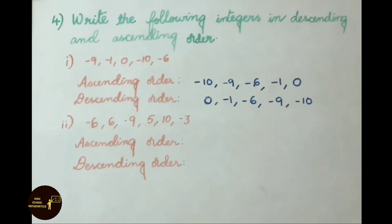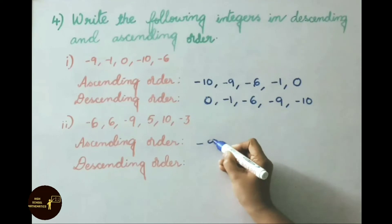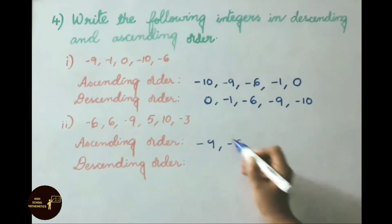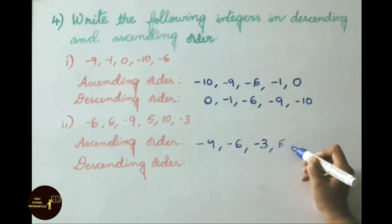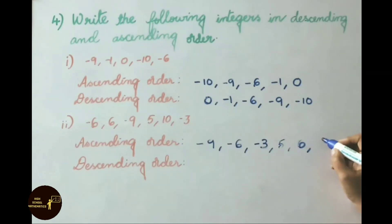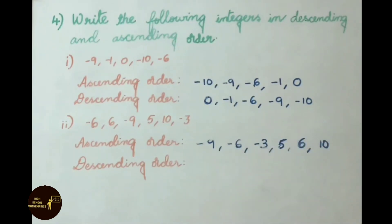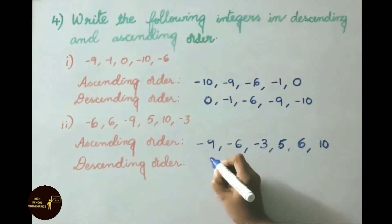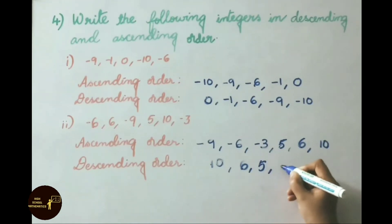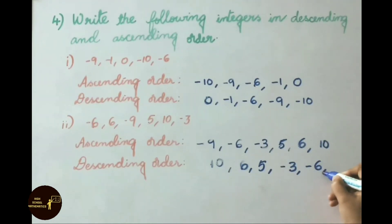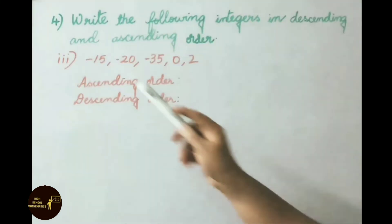Second set: -6, +6, -9, +5, +10, -3. Ascending order: -9, -6, -3, 5, 6, 10. Descending order (reverse): 10, 6, 5, -3, -6, -9.